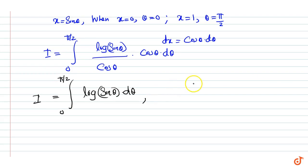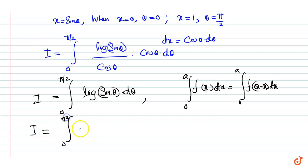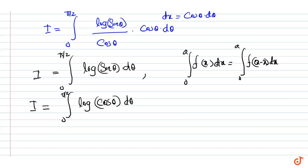Now using the relation that integral from 0 to a of f(x) dx equals integral from 0 to a of f(a minus x) dx, we can write I is also equal to integral from 0 to pi by 2 of log(cos theta) d theta.